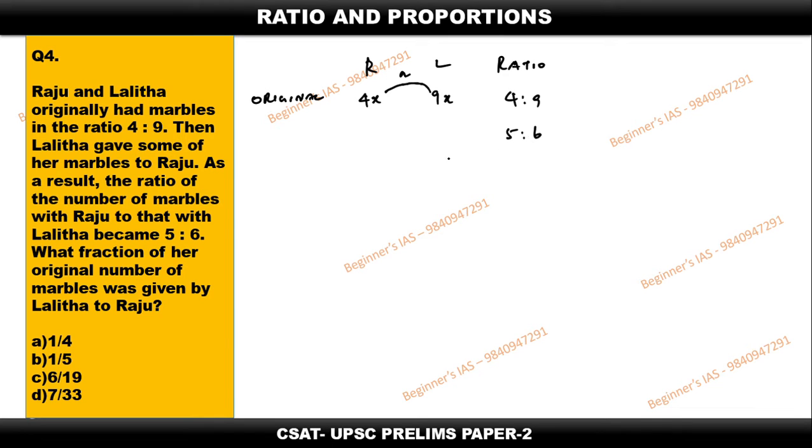5:6, which means that if Lalitha is giving, then surely 9x minus a will be the remaining for Lalitha. For Raju, it gets added by the marbles, therefore 4x plus a. So this is the final. Now according to the statement: